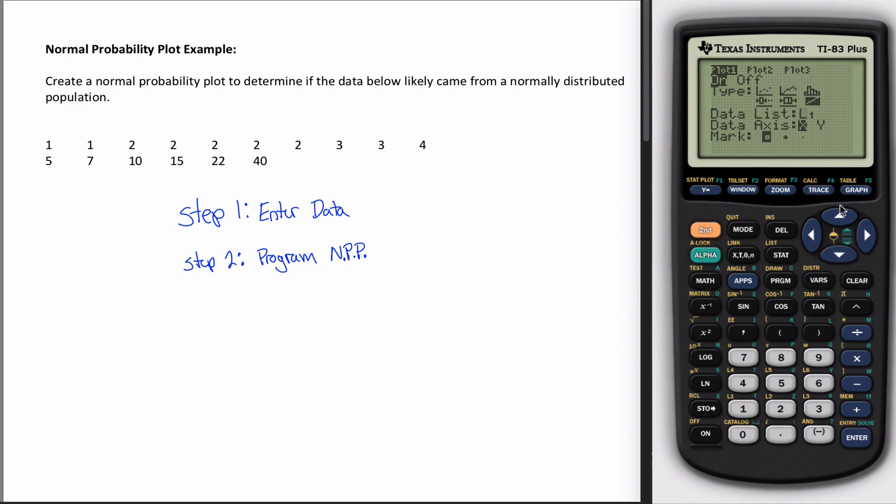When you select that, it's going to ask you some questions. First off, where's your data? You can't make a normal probability plot on data if you don't specify where the data is. Mine's in L1. And then it asks you what axis do you want your data on? So where do you want your actual observations? It doesn't really matter.